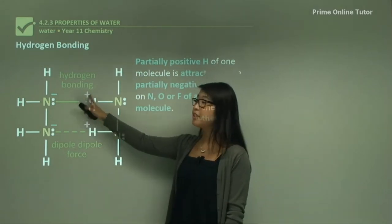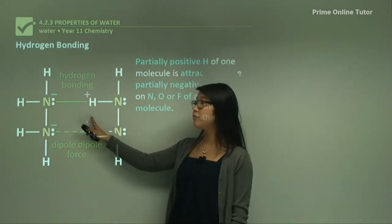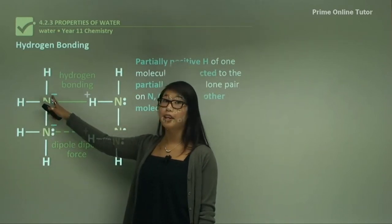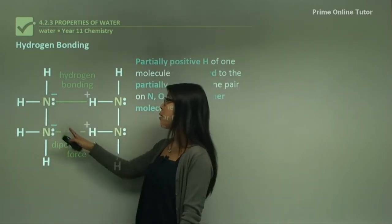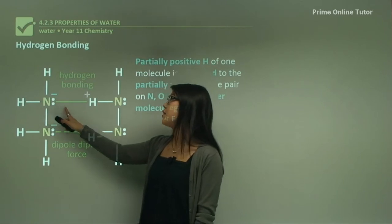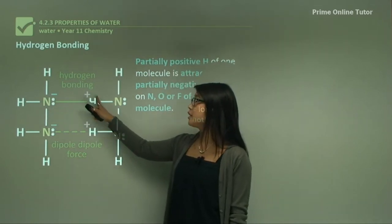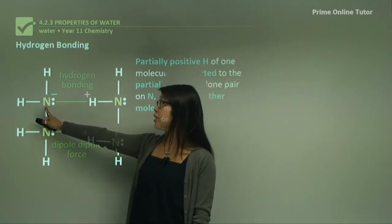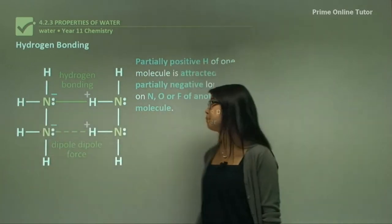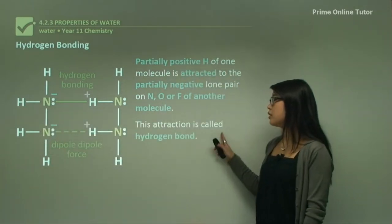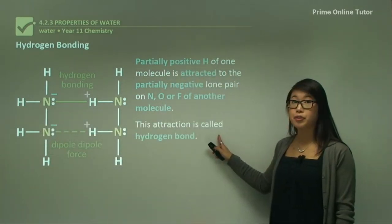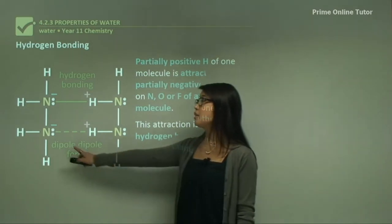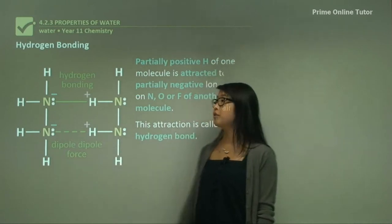We can show that the hydrogen here is positive and the nitrogen here is negative. Nitrogen is slightly negative due to its electronegativity, but it also has lone pairs. So the hydrogen can be attracted towards the slightly negative nitrogen and also towards the lone pair. This is called a hydrogen bond — it is a dipole-dipole interaction, but it also involves a lone pair of electrons.